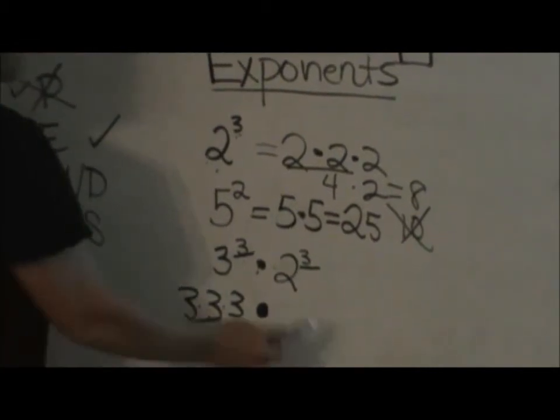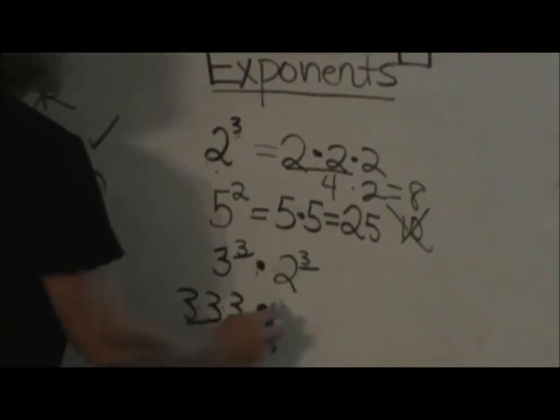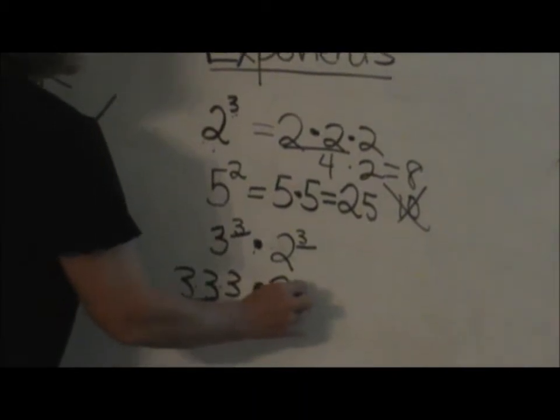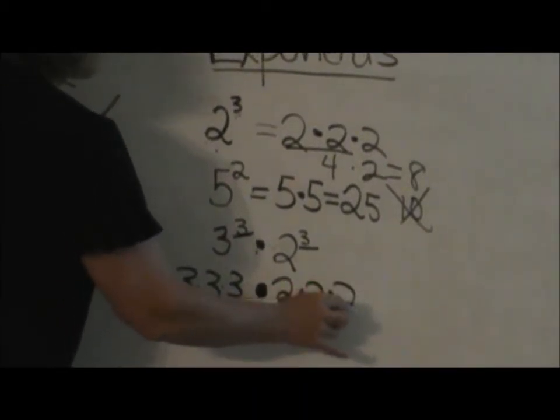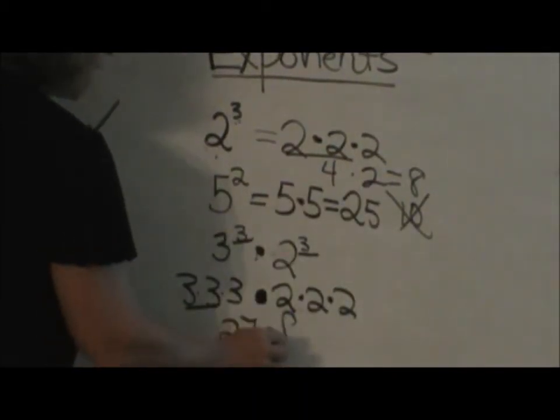So we have 27 times 2 cubed. Well, 2 cubed is 2 times 2 times 2, which we just figured out up here is 8.